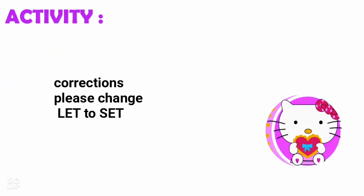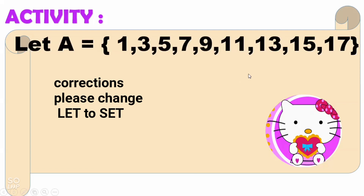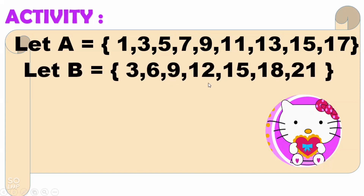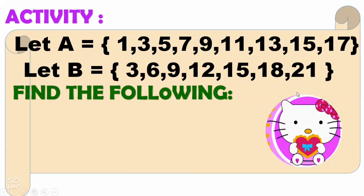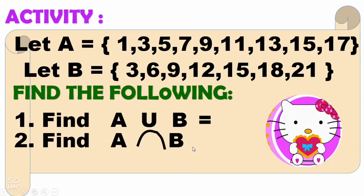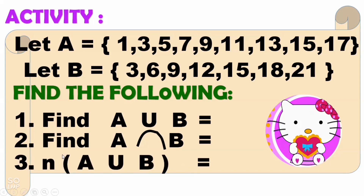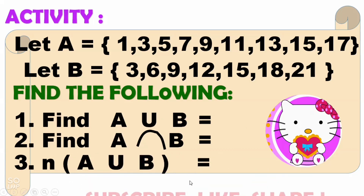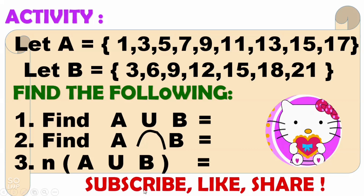Now it's time for your activity. Set A = {1, 3, 5, 7, 9, 11, 13, 15, 17} and set B = {3, 6, 9, 12, 15, 18, 21}. Find the following: (1) A union B, (2) A intersection B, and (3) the cardinality of A union B. You are also going to draw it in a Venn diagram. Please don't forget to like, subscribe, and click the bell button for more videos.